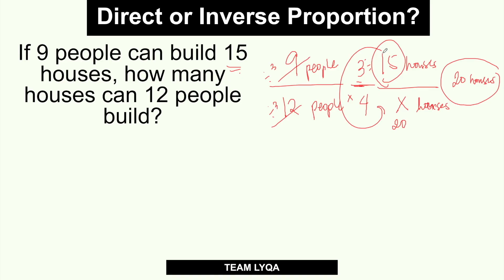Why did we use direct proportion here? Because if you notice — understand the question — if 9 people can build 15 houses, of course if you add more people, you also add more houses they can build. So 9 people build 15 houses, 12 people build 20 houses. It makes sense that it increases because more people are working. If you're working alone, you can only do so much. But if someone helps you, you'll finish more in a day. That is what we call direct proportion: when one increases, the other increases; when one decreases, the other decreases.